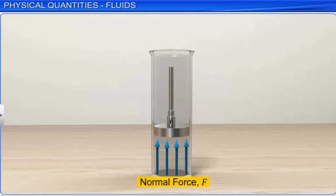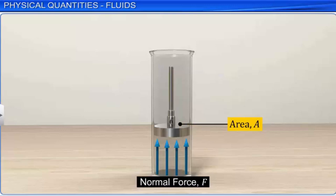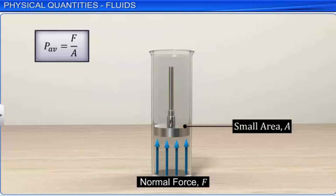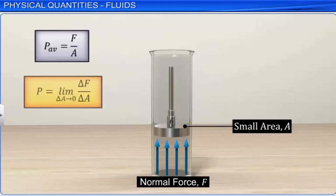In the limiting case, if a small area of the piston is considered arbitrarily, then the pressure is represented as P = δF/δA as δA approaches zero. The magnitude of pressure does not change with direction. Hence, pressure is a scalar quantity.